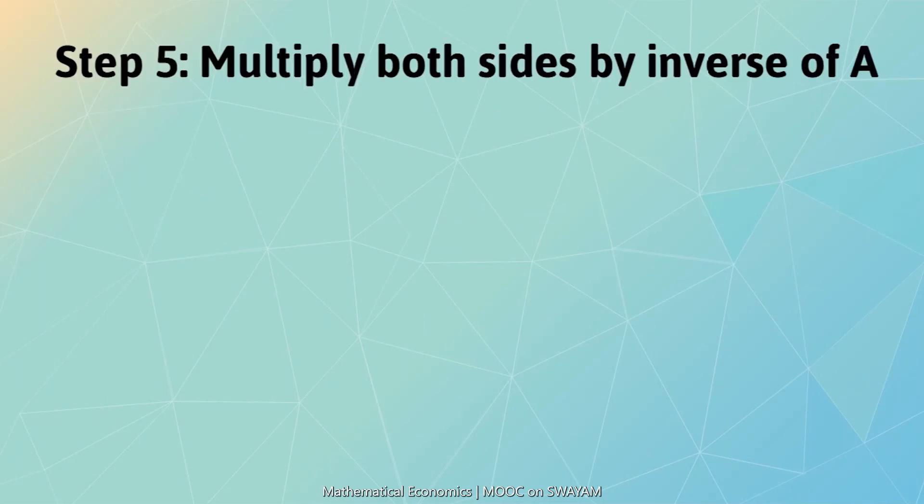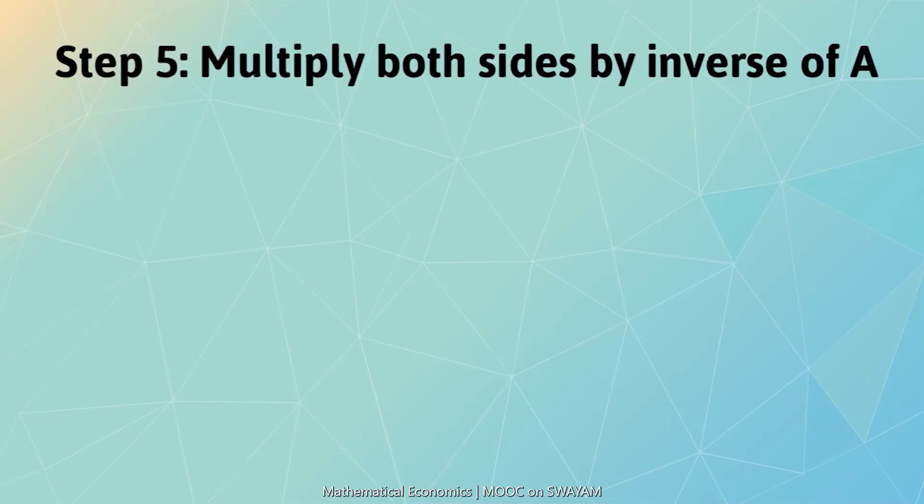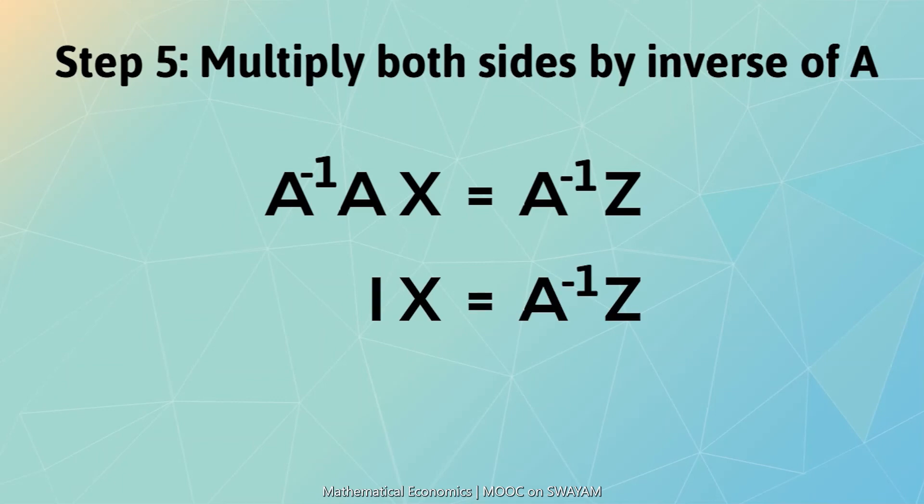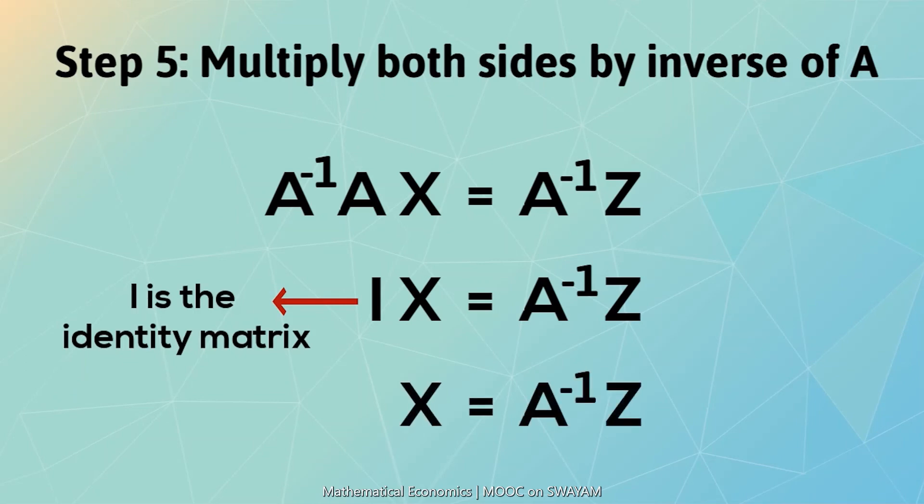In the final step, we multiply both left-hand side and right-hand side of the equation Ax equal to z by A inverse, or A to the power minus 1. From property of inverse of a matrix, if a matrix is multiplied by its inverse, the resultant is an identity matrix. Therefore, we are left with the equation Ix equals A inverse z.